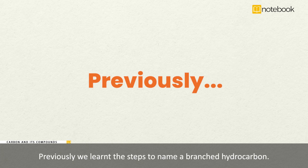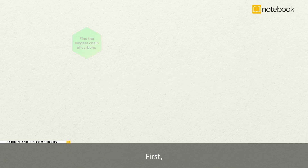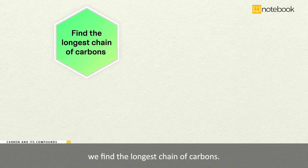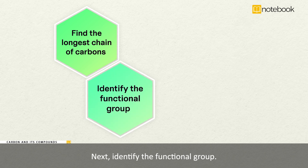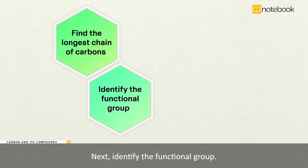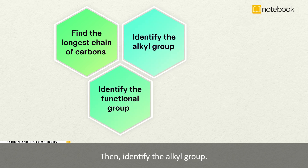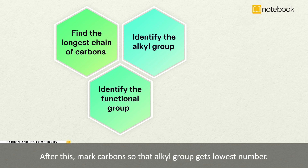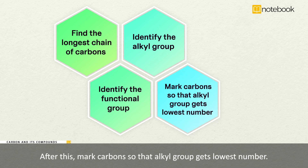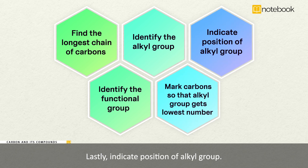Previously, we learnt the steps to name a branched hydrocarbon. First, we find the longest chain of carbons. Next, identify the functional group. Then, identify the alkyl group. After this, mark carbons so that the alkyl group gets the lowest number. Lastly, indicate the position of the alkyl group.